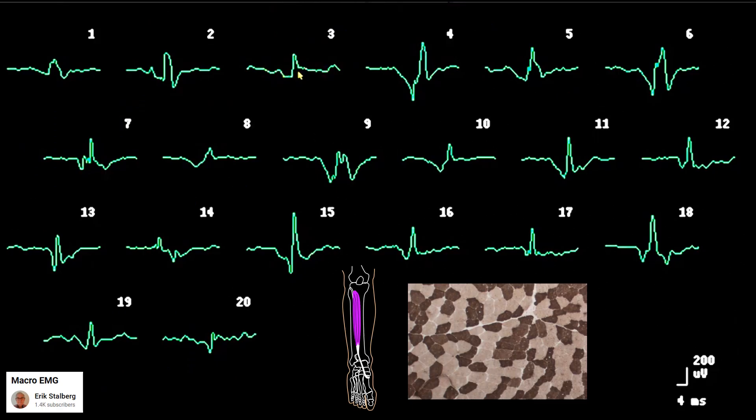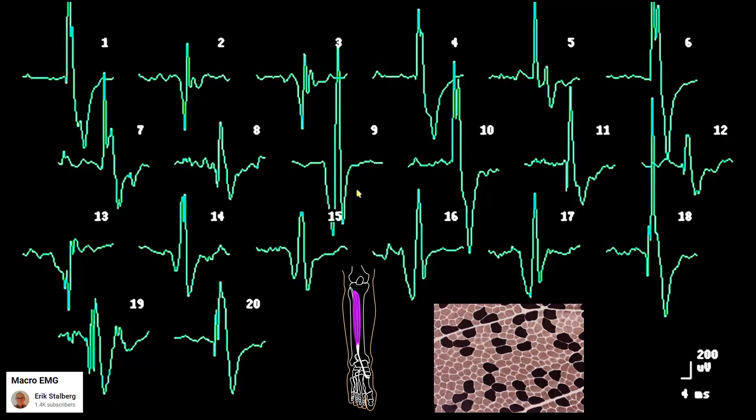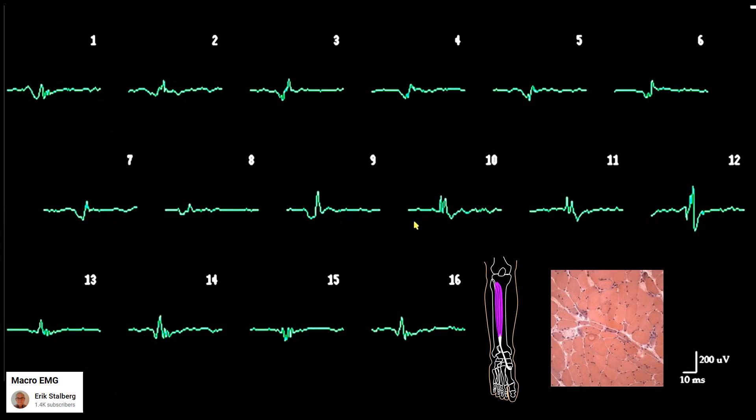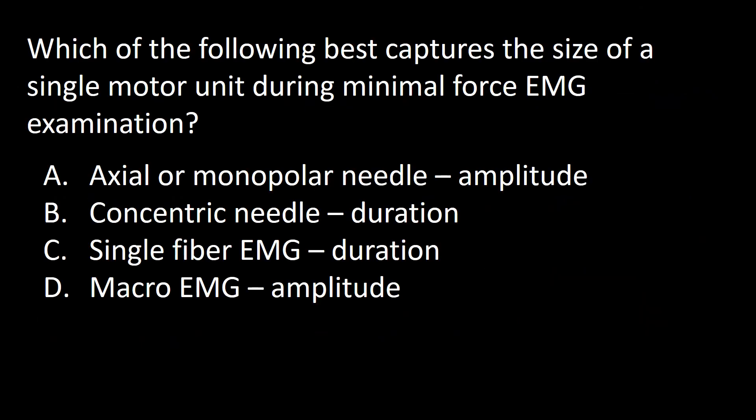This is an example of macromotor units collected from anterior tibialis normal muscle. This is an example of large macromotor units collected from anterior tibialis that has undergone reinnervation. Notice the grouping and predominance of type 1 fibers. This is an example of small macromotor units typically found in myositis collected from the anterior tibialis muscle.